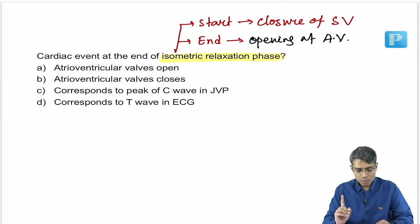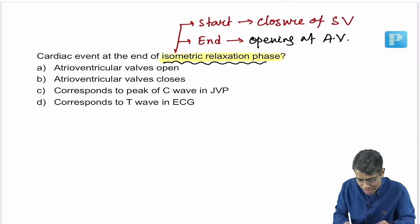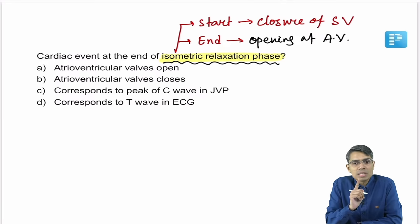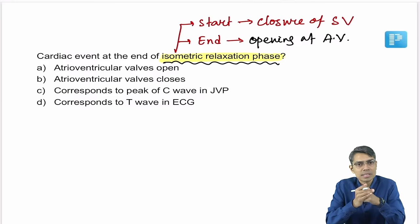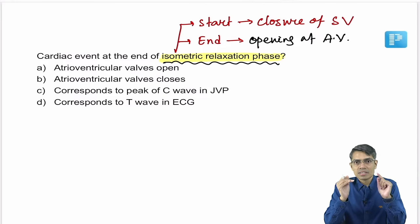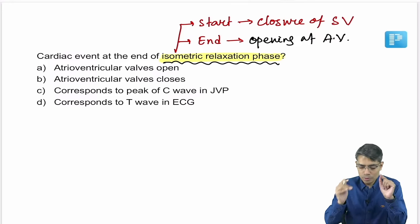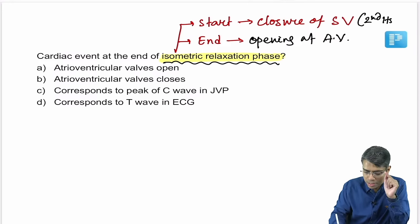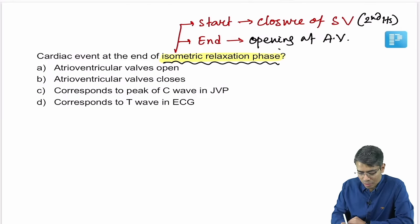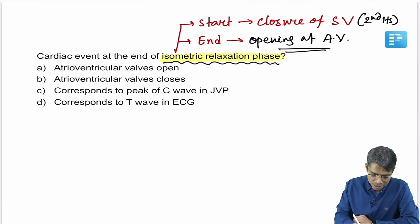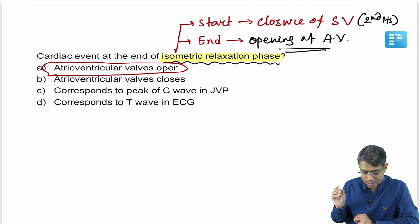Important: closure of semilunar valves produces the second heart sound, which starts the isovolumic relaxation phase. So if asked in which phase the second heart sound occurs, the answer is at the start of the isovolumic relaxation phase. At the end of the isovolumic relaxation phase, AV valves open — that is the direct answer.